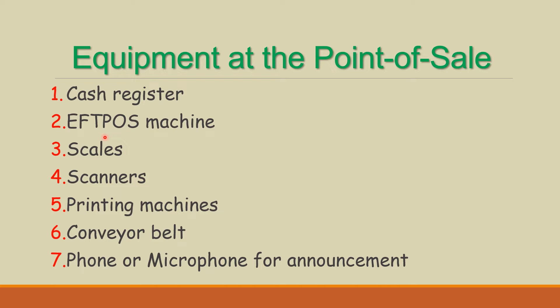If you go shopping, the EFTPOS machine is common for debit card or credit card payments. If you pay at a petrol pump, it has a machine called an EFTPOS machine. Other POS equipment includes scanners that scan products and barcodes, a printing machine for bill printing, a conveyor belt, and a phone or microphone for announcements.